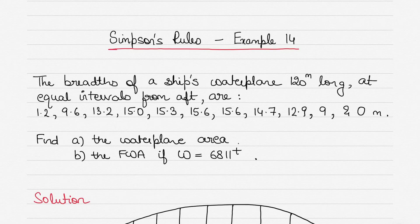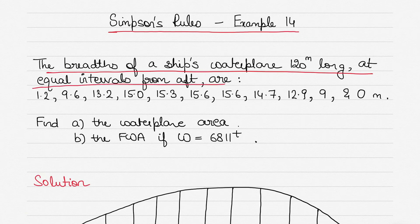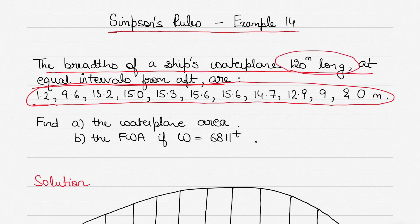Let's get started. The breadths of a ship's water plane, which is 120 meters long, are given at equal intervals from aft. The breadths are: 1.2, 9.6, 13.2, 15, 15.3, 15.6, 15.6, 14.7, 12.9, 9, and 0 meters. If you count them, you will see there are 11 ordinates. Also note these are full breadths, not half breadths.